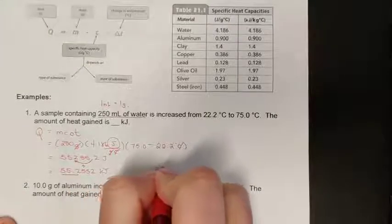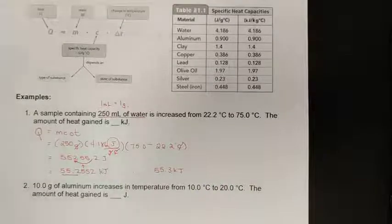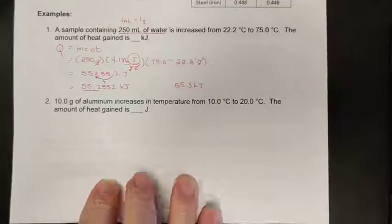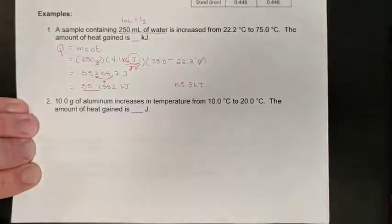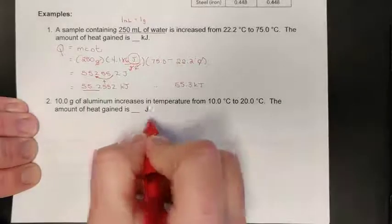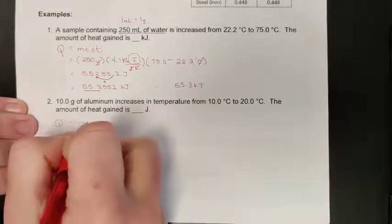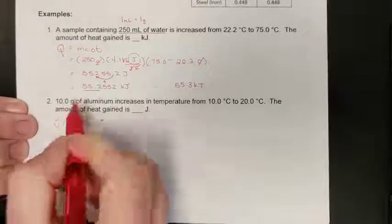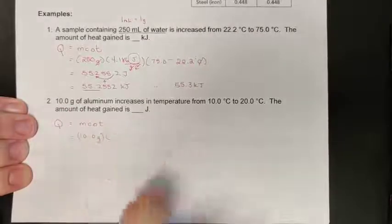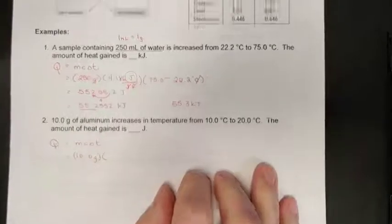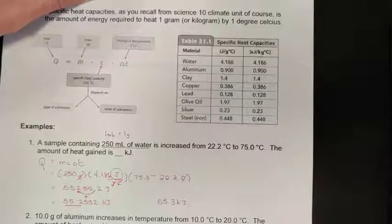We can take a look at another one here, pretty straightforward. 10 grams of aluminum increases in its temperature from 10 to 20 degrees C. The amount of heat gained is how many joules this time, so be mindful of what the question is asking for. Another very simple q equals mc delta t problem. We've been given an exact mass here of 10.0 grams. I am dealing with a different material, so I'll have a different specific heat capacity. Using your data sheet, we can find out aluminum is 0.900 according to this one.